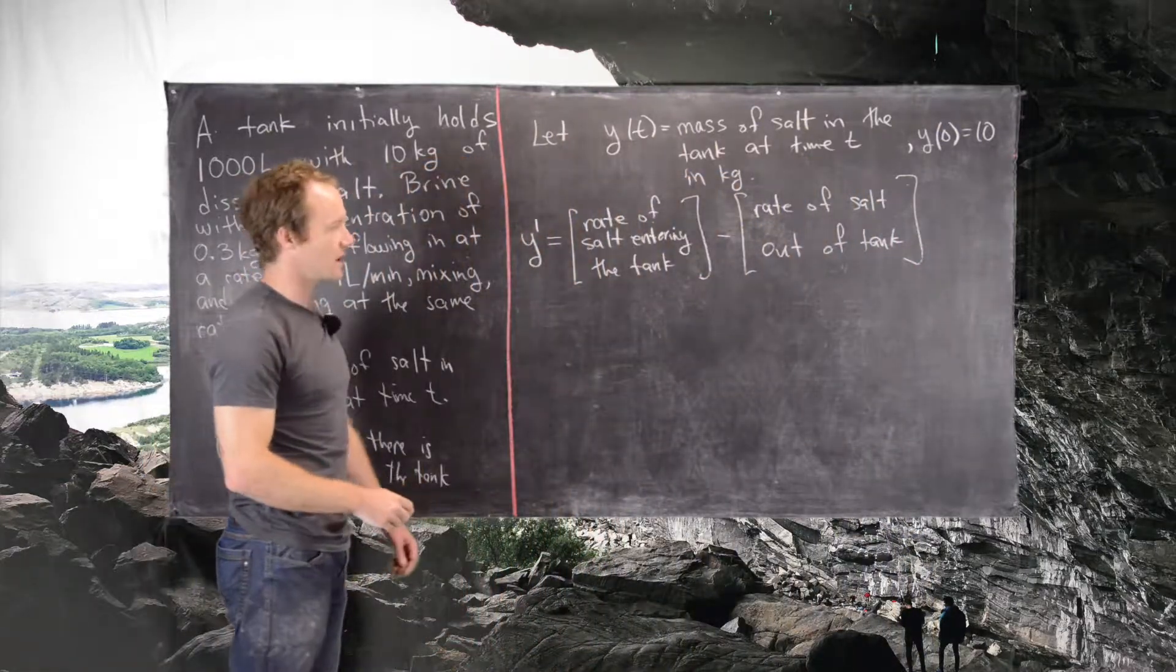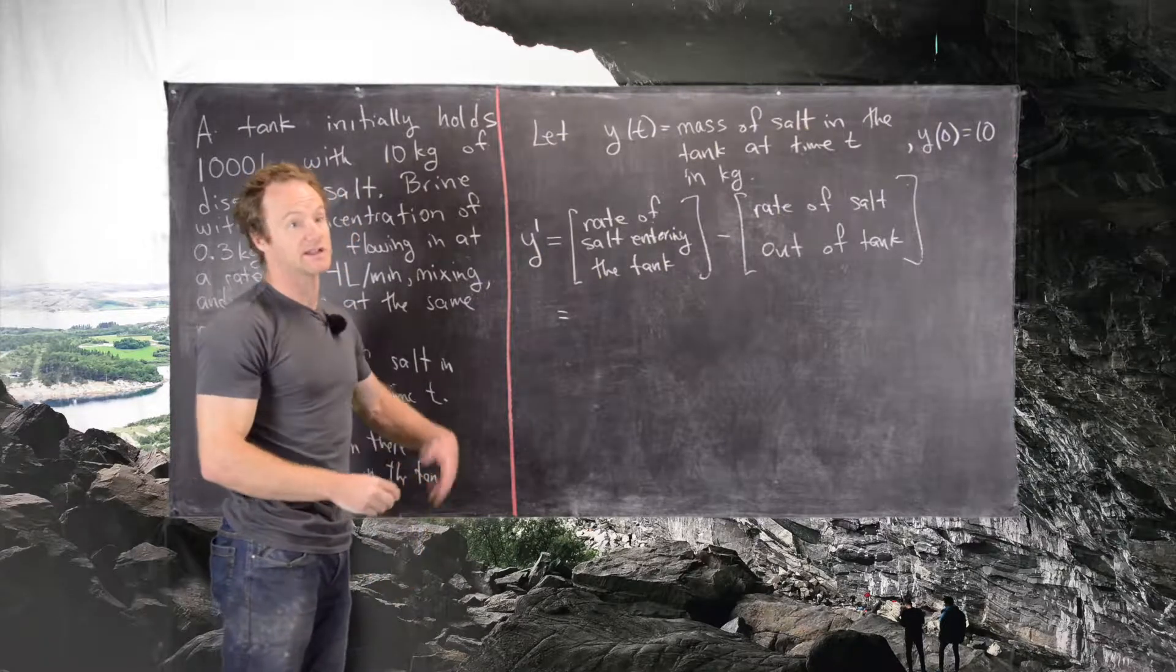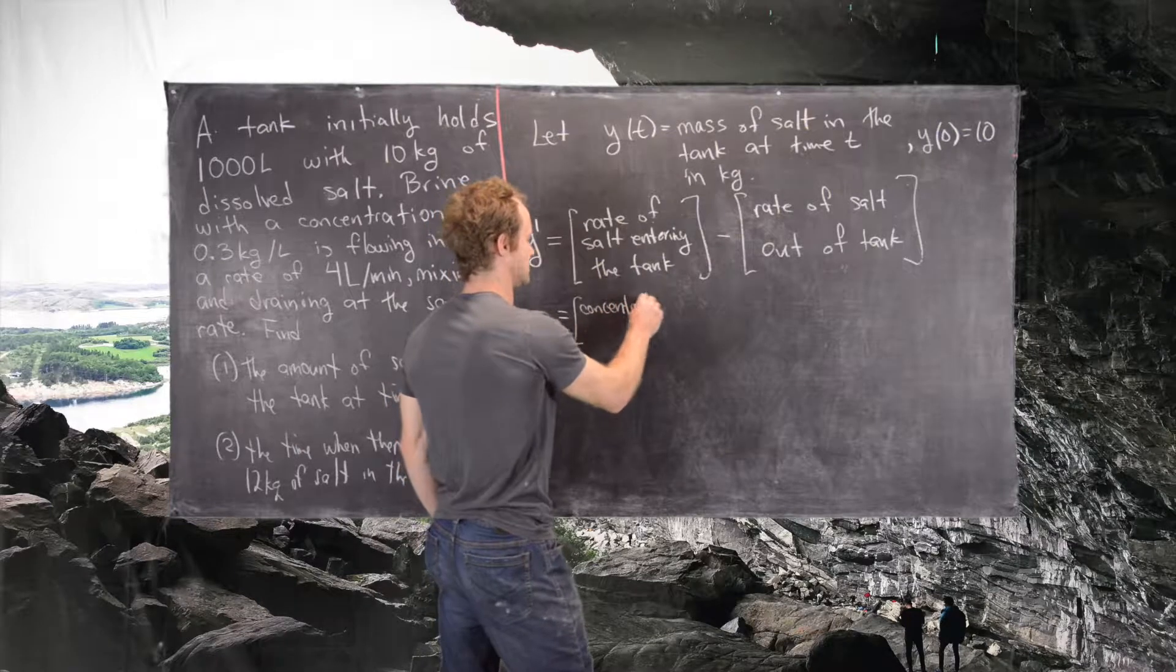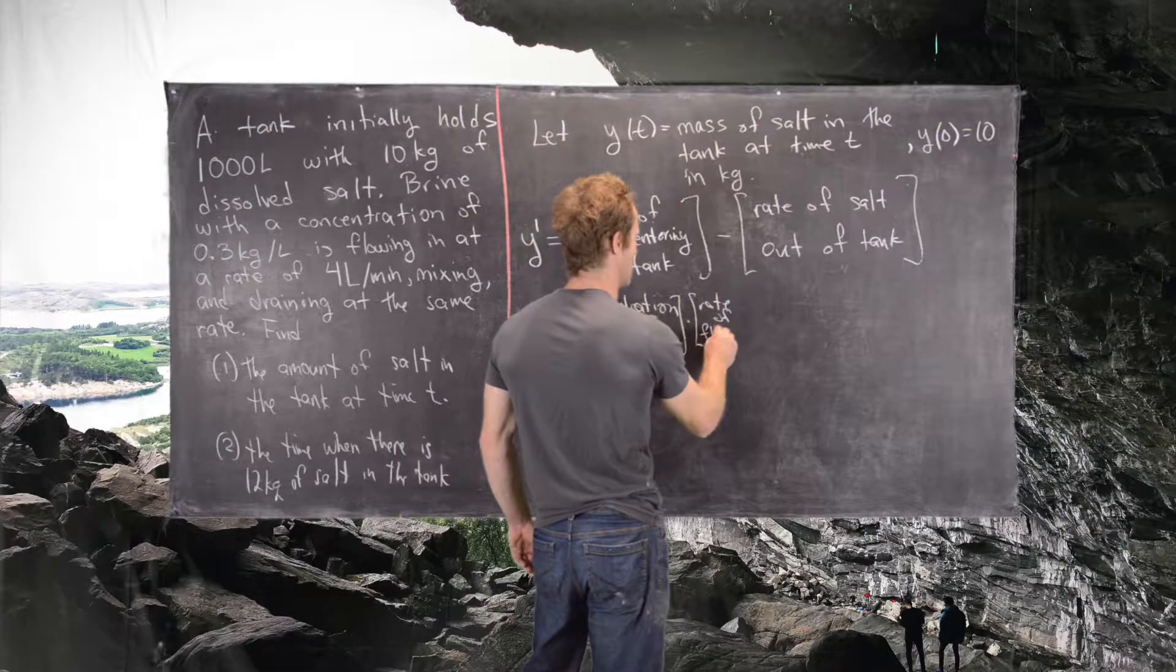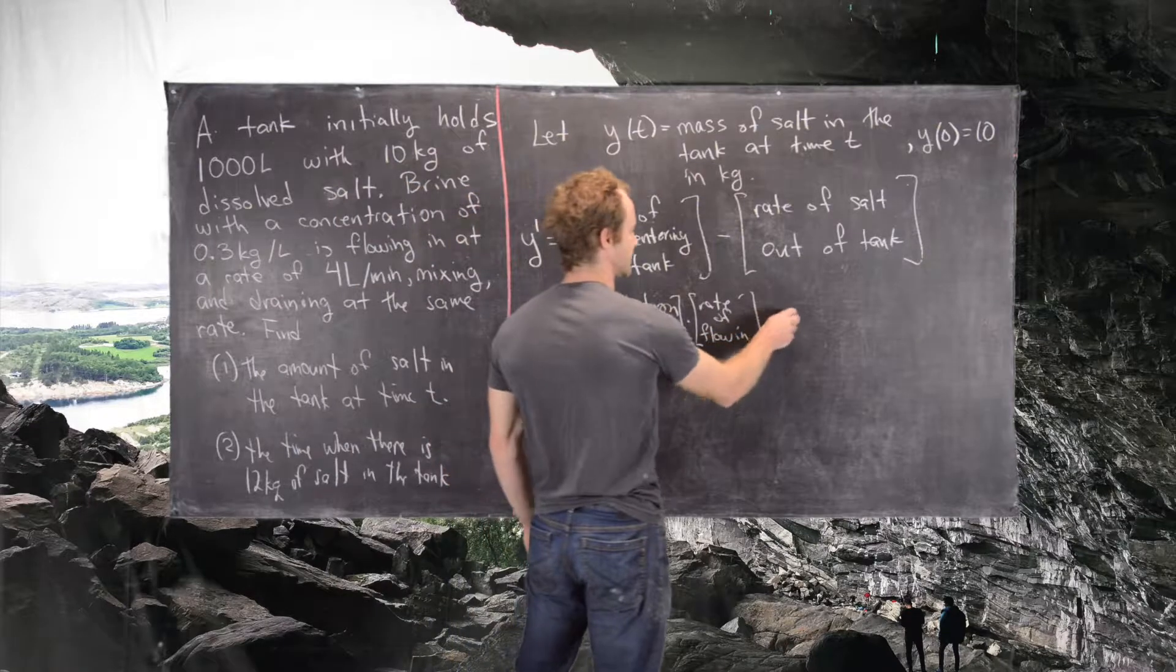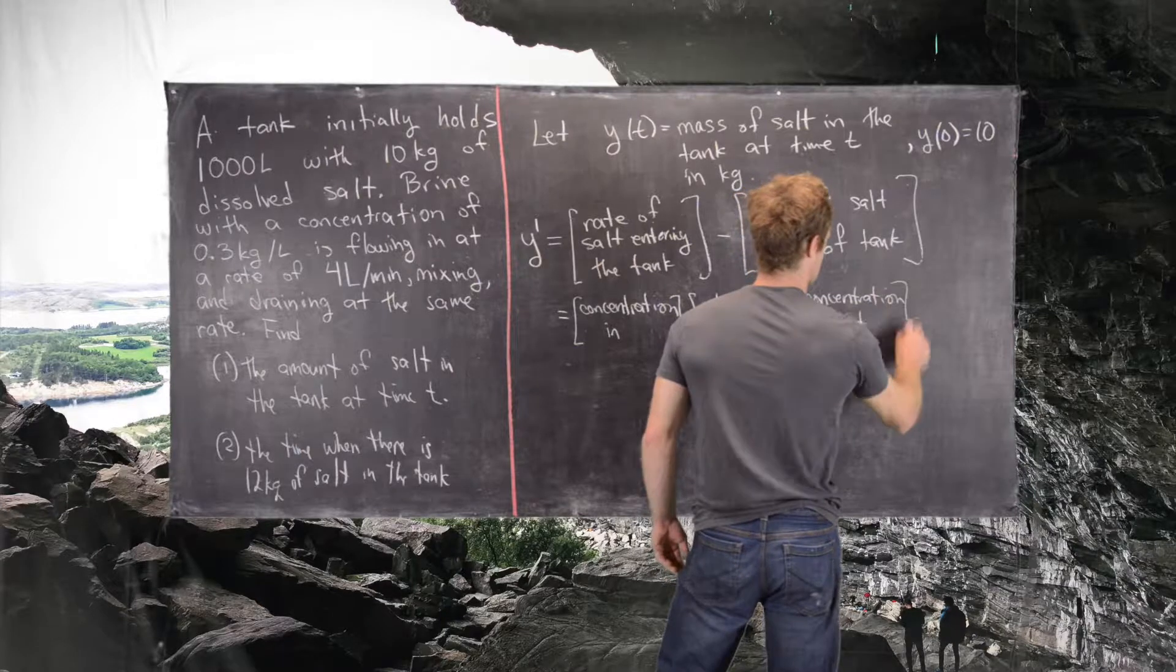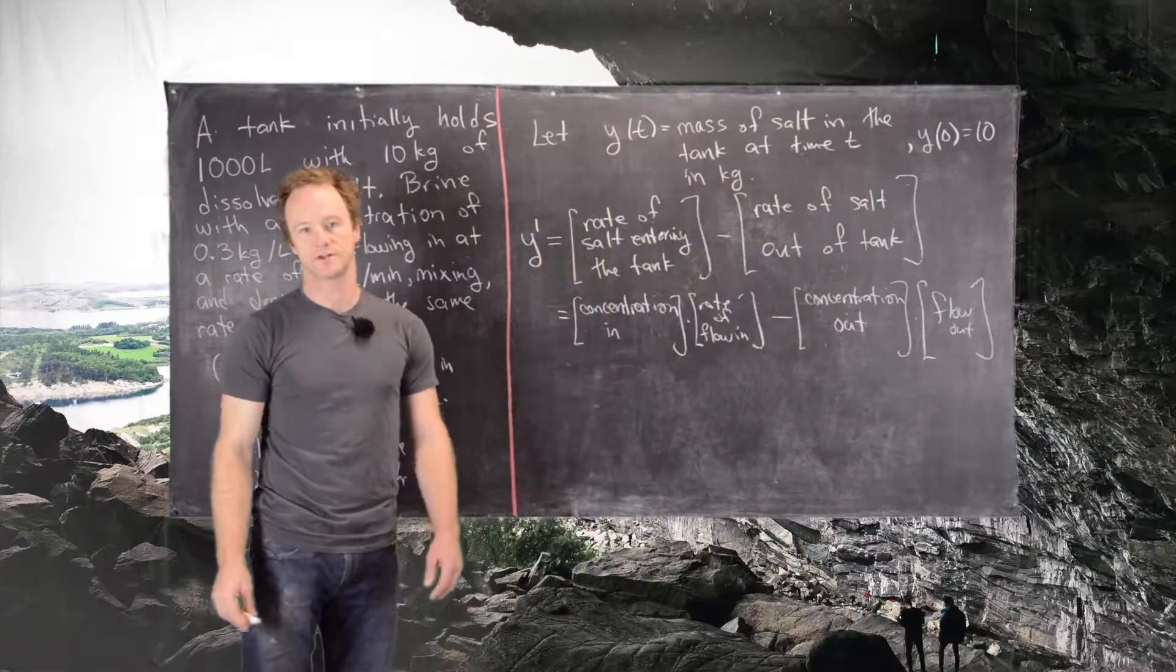Let's break down each of those. This one will be given by the concentration that is flowing in, the concentration of the salt coming in multiplied by the flow in. So this is the concentration in multiplied by the rate of flow in, how fast the water is flowing in. And this is going to be something similar: the concentration out times the rate of flow out.